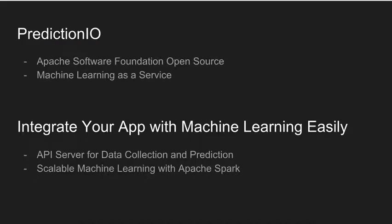Apache Prediction IO is one of the top-level projects of Apache Software Foundation and is the largest machine learning as a service open-source software project that you will be able to find online.